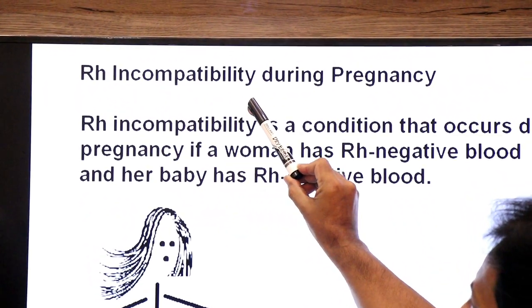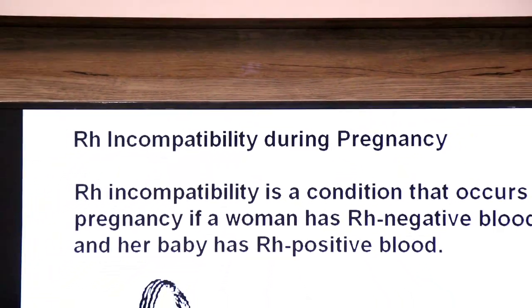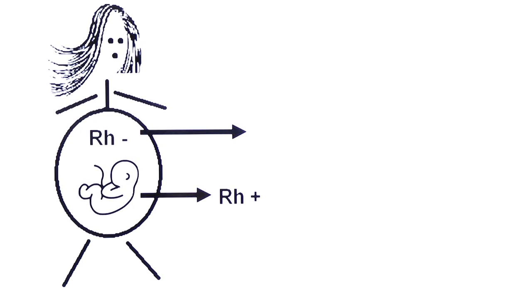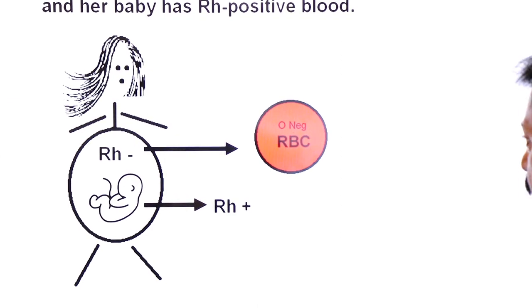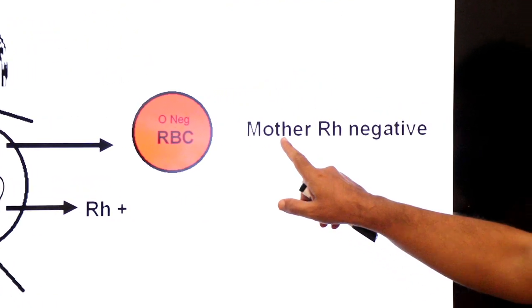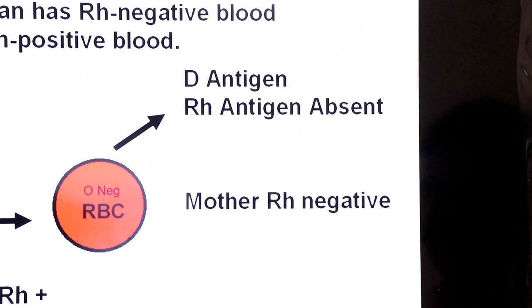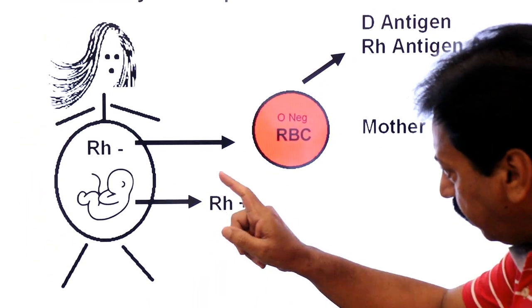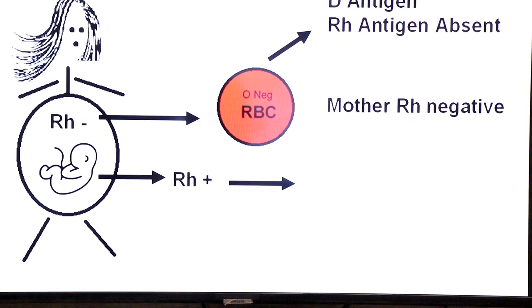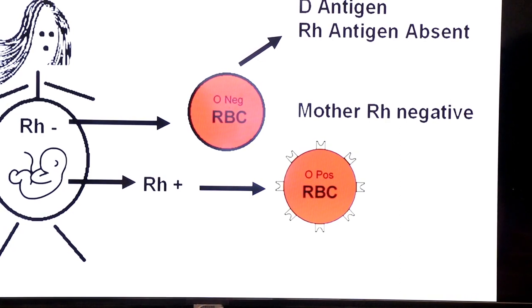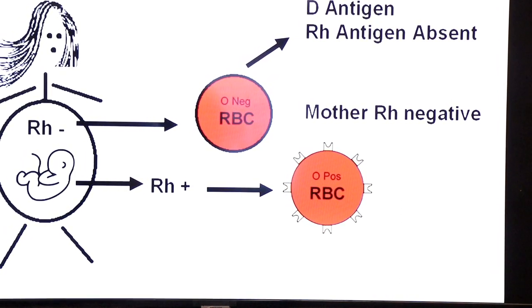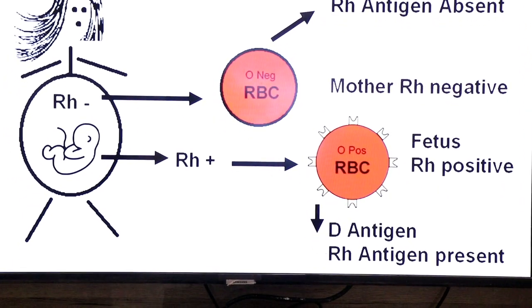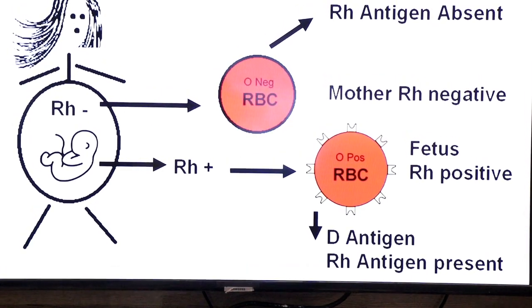The mother is RH negative, which means the D-antigen is absent on the surface of her RBCs. But the baby's RBC surface is RH positive — the D-antigen is present on the RBCs of the developing fetus.